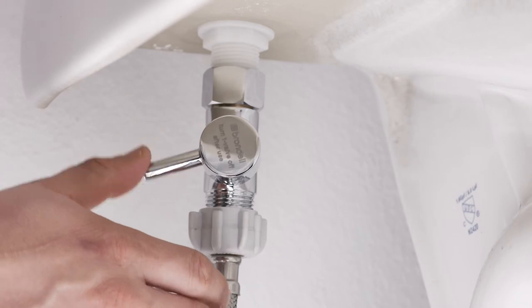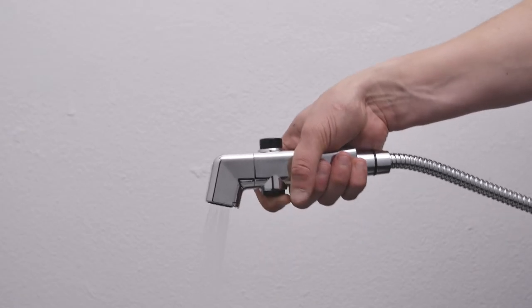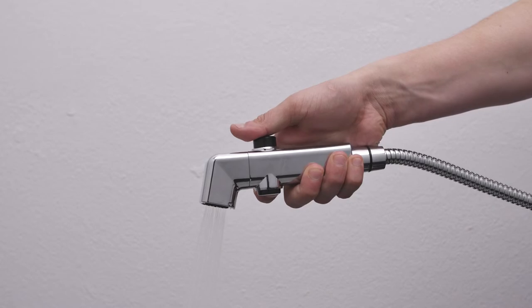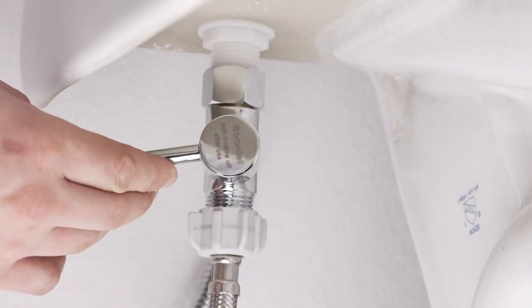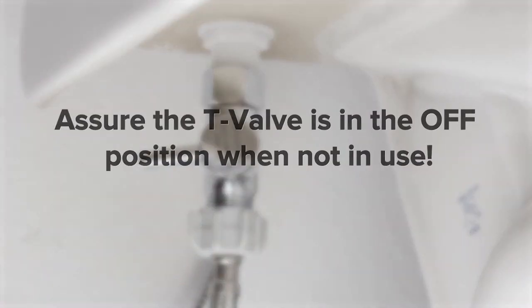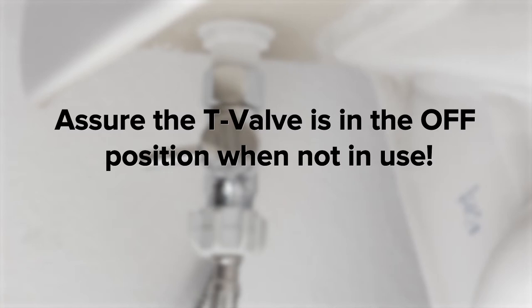To use the bidet, open the provided T-valve and press the button on the spray head to initiate the flow of water. For safety, it's important to follow our manufacturer's recommendations and turn off the T-valve after each use.